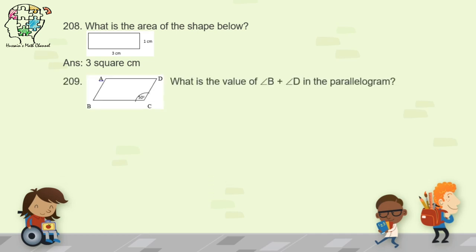Another question: what is the value of B plus D? Since opposite angles are equal in a parallelogram, angle C equals 50 degrees, so angle A is also 50 degrees. A plus C equals 100 degrees. The total of all four angles is 360 degrees. Subtracting 100 from 360 gives 260 degrees.